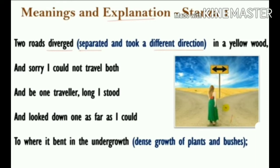'Two roads diverged in a yellow wood' — while passing by a yellow wood he observes that two roads are diverged, meaning there is a junction where the roads split in two different directions. He says 'And sorry I could not travel both' — he is feeling sorry because he wanted to take both roads but it was not possible. He had to choose one. He says 'And be one traveller, long I stood and looked down one as far as I could.' Here the road is also a symbol of choices.